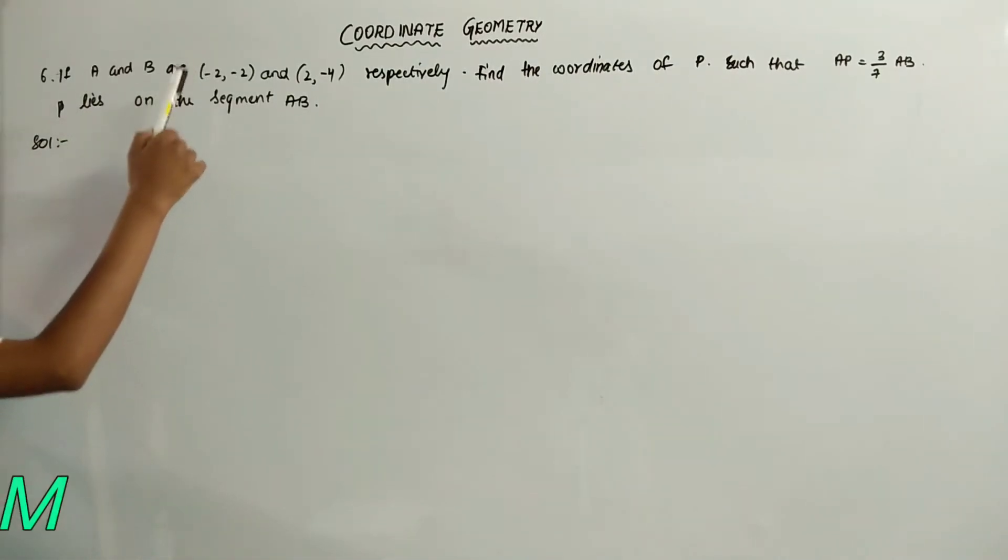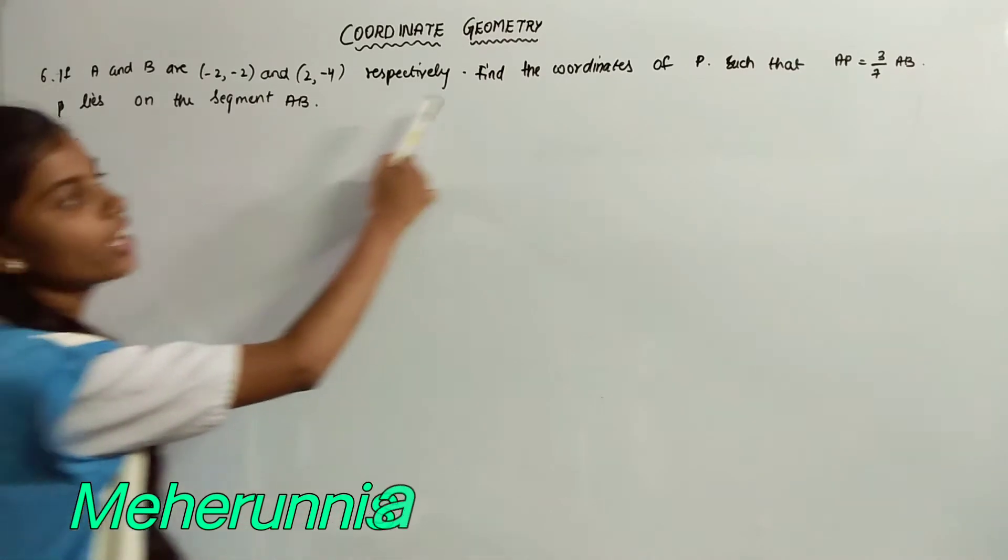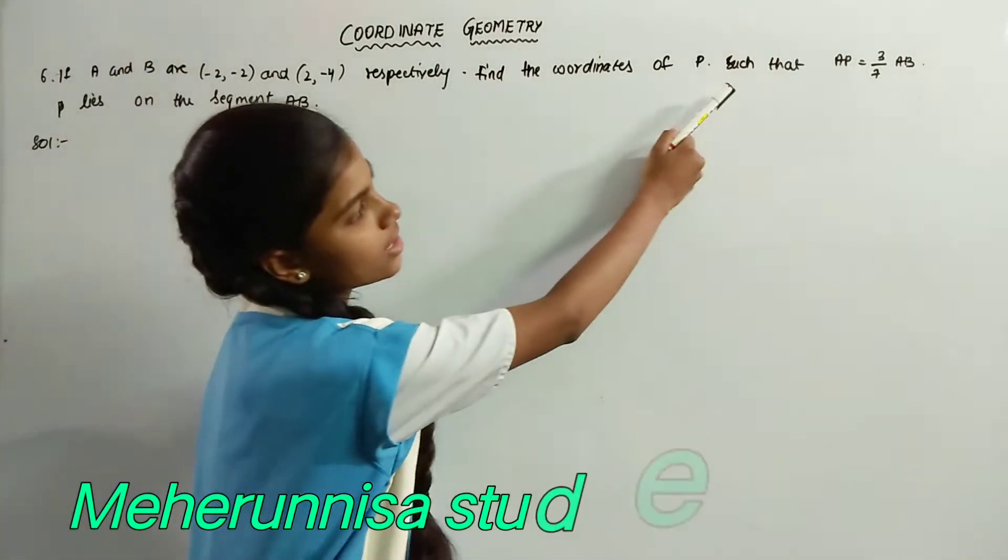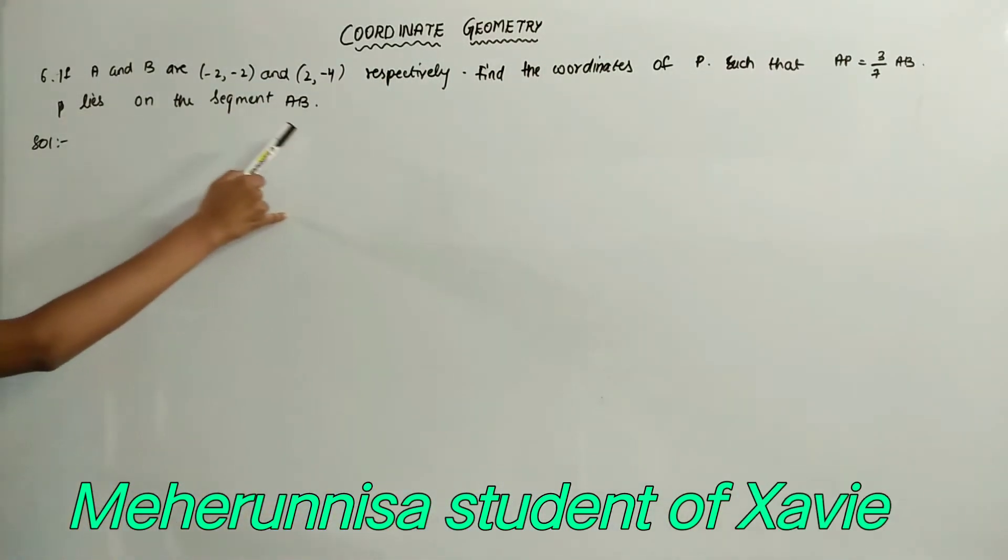If A and B are minus 2 comma minus 2 and 2 comma minus 4 respectively, find the coordinates of P such that AP is equal to 3 by 7 AB. P lies on the segment AB.